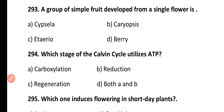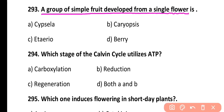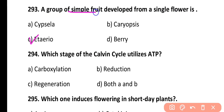Question 293. A group of simple fruits developed from a single flower: Capsule, Caryopsis, Etaerio, or Berry. Correct answer is Option C. A group of simple fruits developed from a single flower is called an aggregate type of fruit, and Etaerio is an aggregate fruit. Capsule, Caryopsis, and Berry are simple fruits.